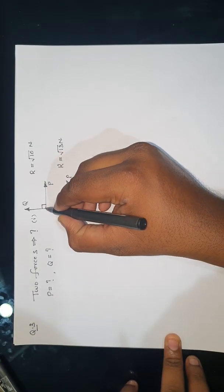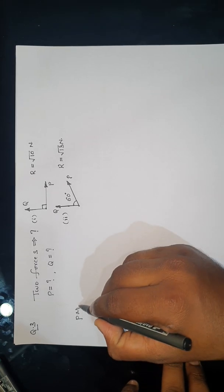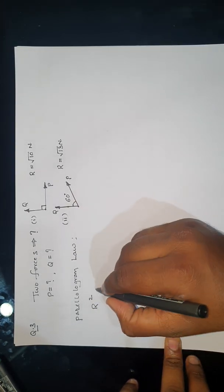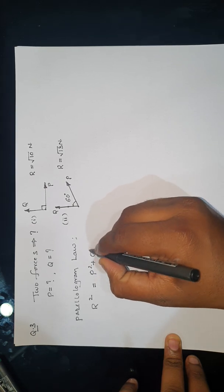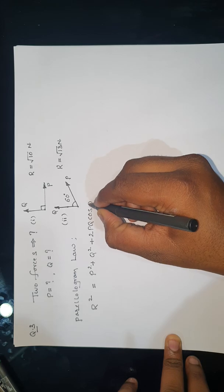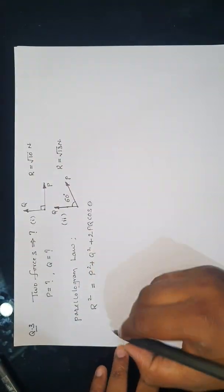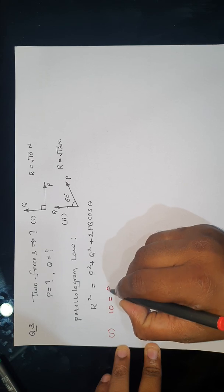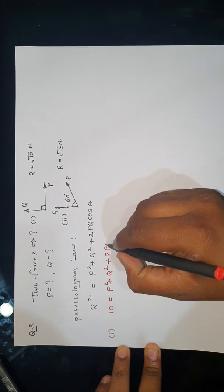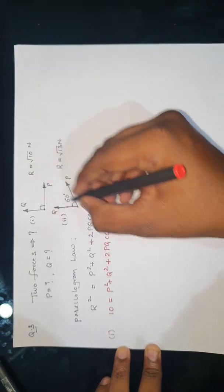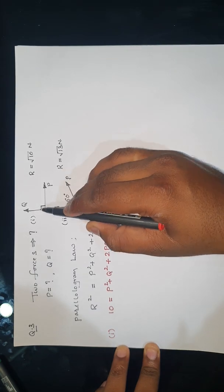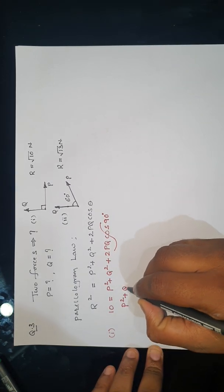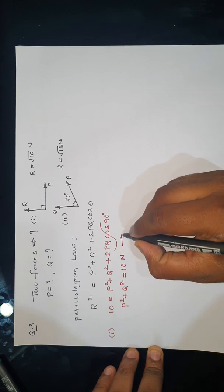At a point there are two forces acting, so we apply the parallelogram law. According to the parallelogram law, R² = P² + Q² + 2PQ·cos θ. For the first condition, substituting R = √10 N: 10 = P² + Q² + 2PQ·cos 90°. Since cos 90° = 0, we get P² + Q² = 10 N. This is equation number 5.